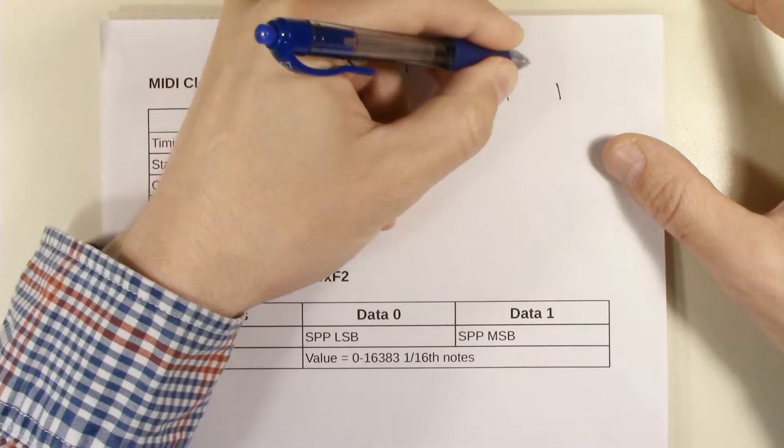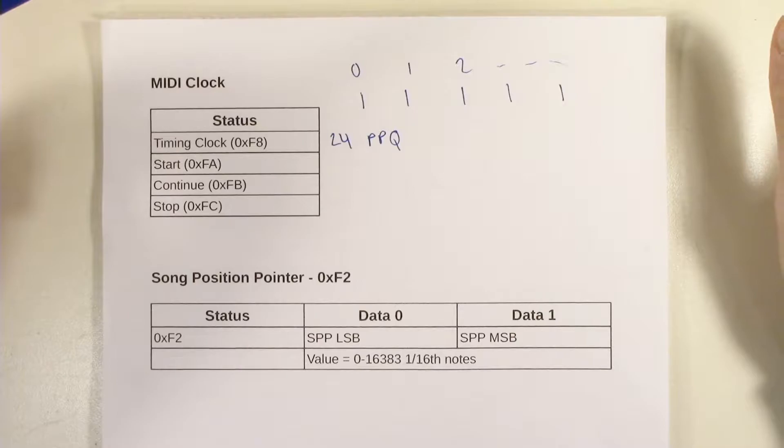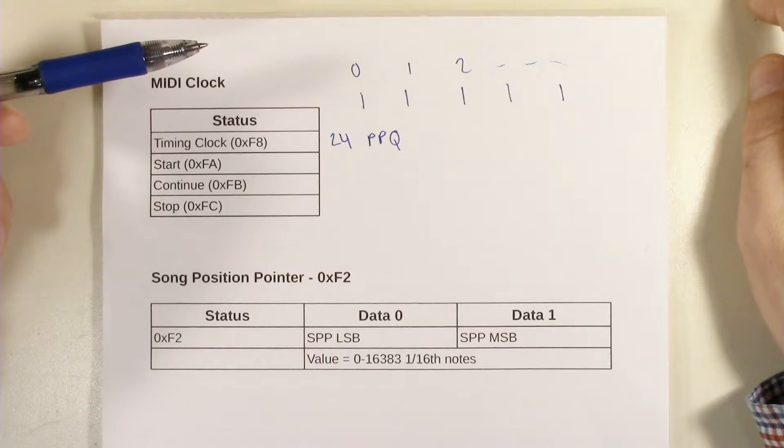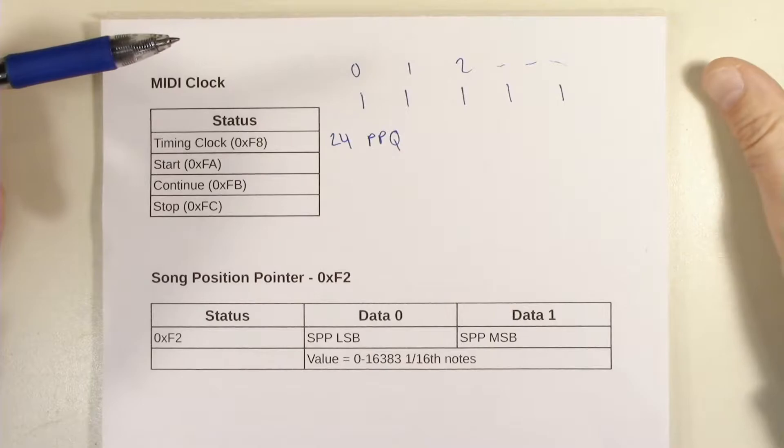So 24 pulses per quarter note come along and those are the things that say this is time 0, this is time 1, this is time 2 and so on. But the problem with these 24 PPQs is that in some cases a sequencer, that's all the information it needs, it doesn't need really small divisions of time to deal with things like making notes start and stop at a very specific instant. But normally it does.